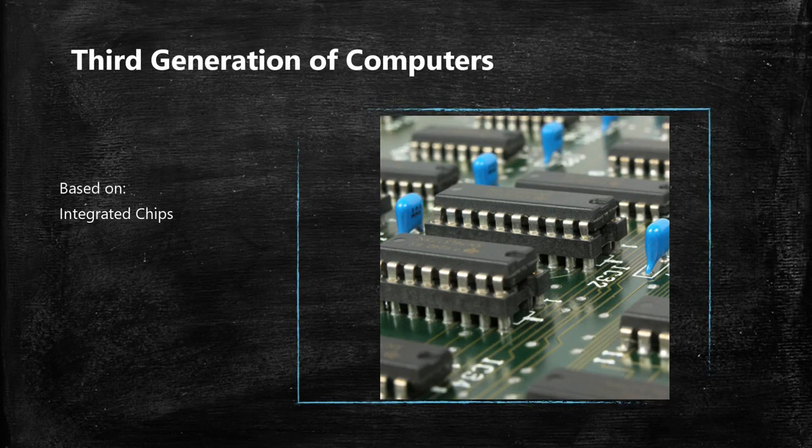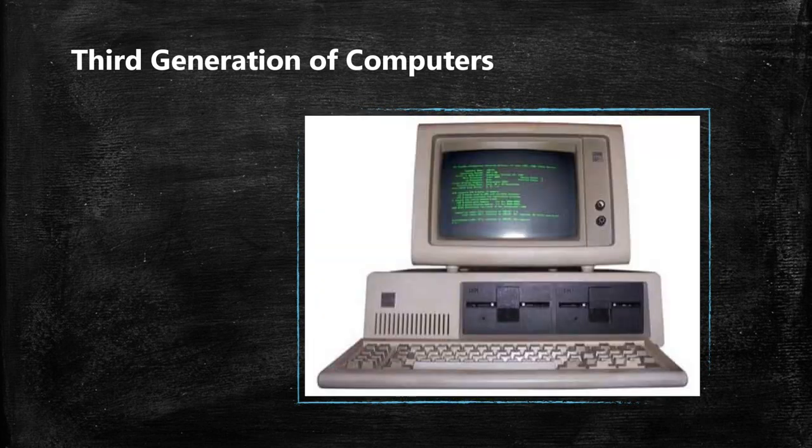The third generation of computers ran from 1964 to 1971. Due to huge improvements in electronics, transistors were made even smaller and fixed on silicon chips called integrated circuits. This led to a massive increase in speed and efficiency. These computers were the first to use a keyboard for input and a monitor for output. They were able to run several applications at the same time and were very cost-effective and affordable to the general public.